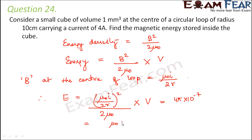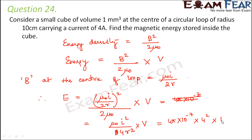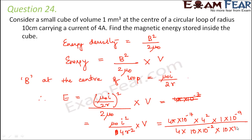Substituting B = μ₀I/(2R) into the energy formula: E = (μ₀I²)/(4R²) × (1/(2μ₀)) × V = μ₀I²V/(8R²). Putting in μ₀ = 4π × 10⁻⁷, I = 4 A, V = 1 × 10⁻⁹ m³, R = 10 × 10⁻² m, the answer is 8π × 10⁻¹⁴ joules.